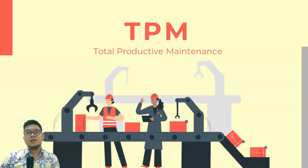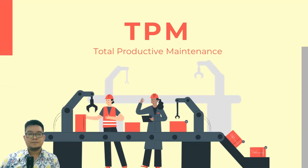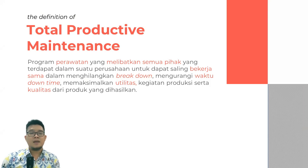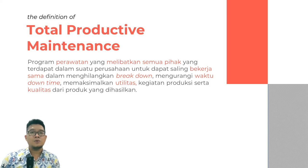Kita akan beranjak ke bahasan selanjutnya, yaitu tentang TPM atau Total Productive Maintenance. Ini akan lebih banyak berkaitan dengan kondisi peralatan ataupun mesin di lini produksi. Definisi dari Total Productive Maintenance merupakan suatu program perawatan yang melibatkan semua pihak yang terdapat dalam suatu perusahaan untuk saling dapat bekerja sama dalam menghilangkan breakdown, mengurangi waktu downtime, memaksimalkan utilitas ataupun penggunaan peralatan, kegiatan produksi, serta kualitas dari produk yang dihasilkan.